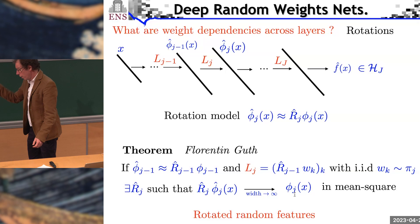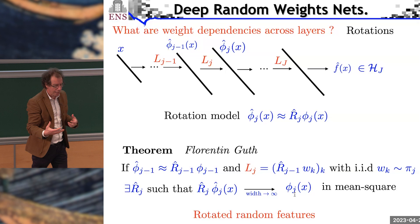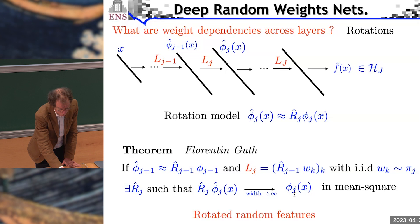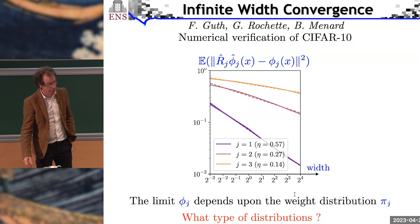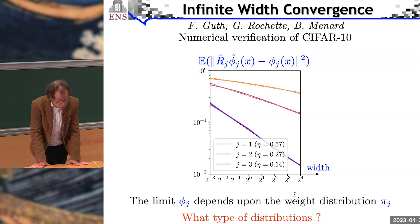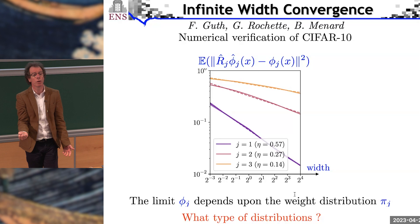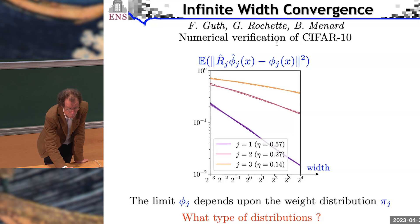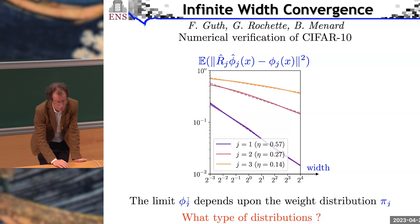Now, is that true? Then you can come back to the network and verify it. Now, if you go, and that's the work of Florentin, Gaspard Rochette, and Brice Menard, if you go on neural nets such as on CIFAR and you look at all layers, you can see that indeed modulo rotation, all the layers, activation layers, they converge to a fixed layer up to a random rotation. Now, the question then is to understand what is this fixed layer, this deterministic layer in that framework. Another way to say it is what the probability distribution of the random feature.